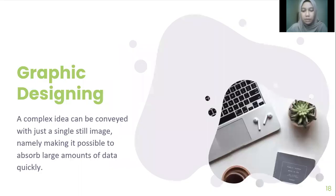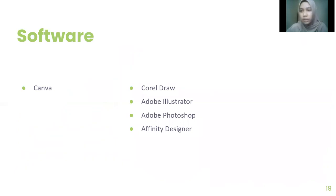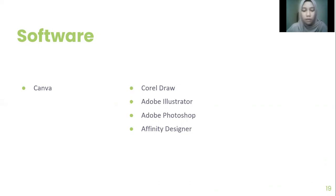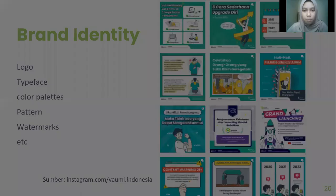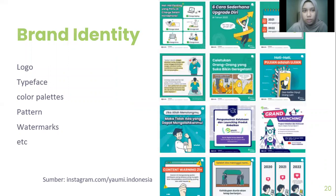Now we're going to graphic designing. If you have graphic designing skill, that's really good. But if you don't, don't worry because there are easy tools such as Canva for making designs for your content. Or you can also learn designing using CorelDRAW, Adobe Illustrator, Adobe Photoshop, and Affinity Designer, among others. Before you start designing your content, you need to first know about the brand identity, which consists of logo, typeface, color palettes, pattern, watermarks, and others.